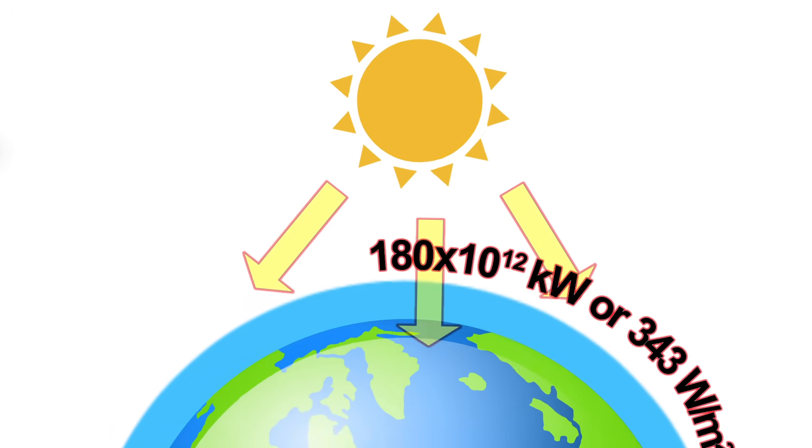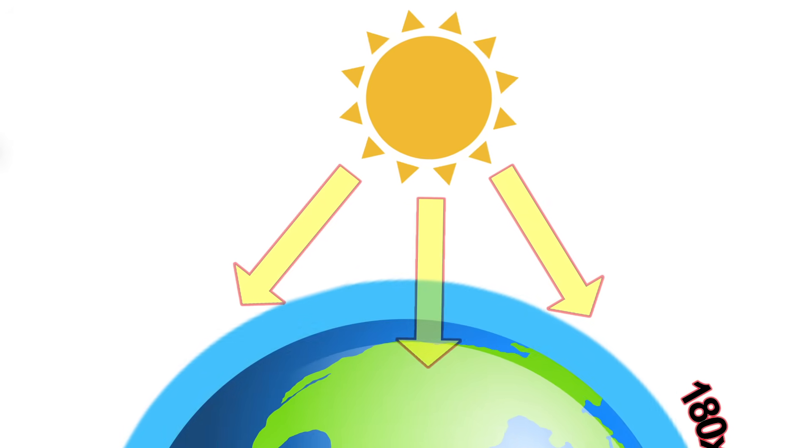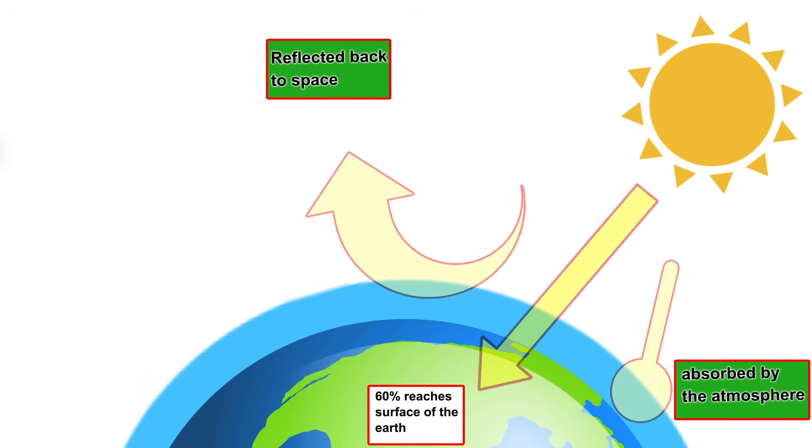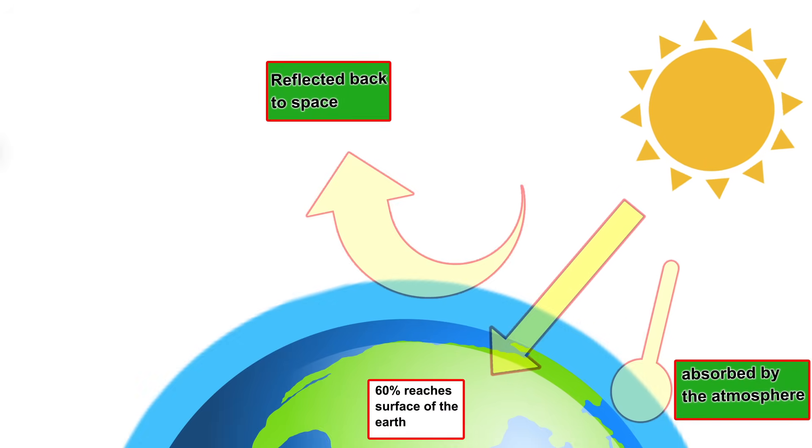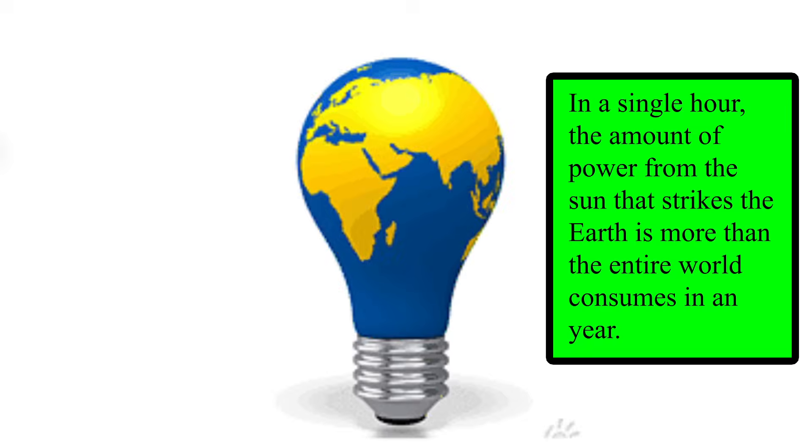Earth is located about 150 million kilometers from the Sun. About 60 percent of this amount, or 108 trillion kilowatts, reaches the surface of the Earth. The rest is reflected back into space and absorbed by the atmosphere.